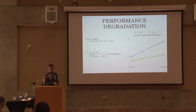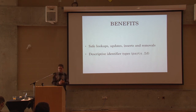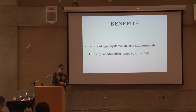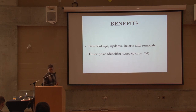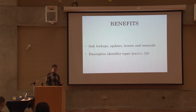To recap, the benefits of using total maps are safe lookups, safer updates, and to some degree safer inserts and removals — especially with the complement type, since you can only insert at locations where no element currently exists. This avoids accidentally overwriting existing elements. Similarly, if you try to remove something that wasn't there, that's probably an error you'd want caught at compile time. Another benefit is very descriptive identifier types — parts.id couldn't be clearer; it precisely describes what's happening.